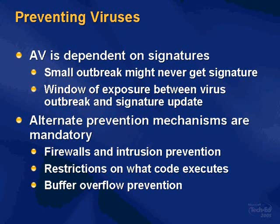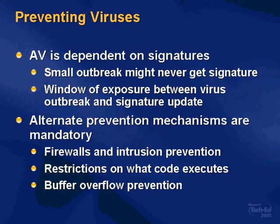Alternate prevention mechanisms for viruses are absolutely 100% necessary. Firewalls on the inside and outside of your network — because the perimeter is not just how you're facing the Internet, but also the machines within your network, since end users are bringing in laptops from the road. Intrusion prevention is another one, and eventually we're headed toward restrictions on what code executes on end user machines. One way to do that today is with software restriction policies, a feature of Windows XP and Server 2003.